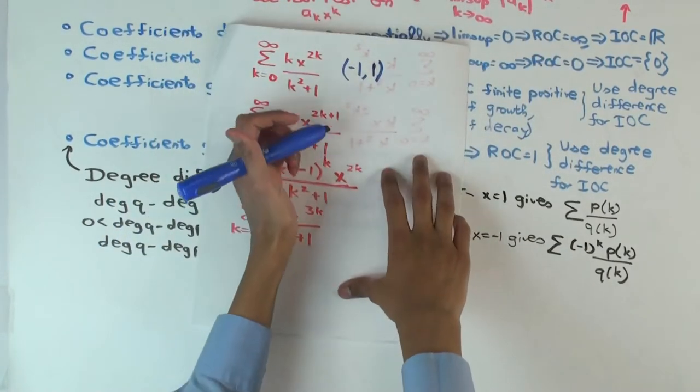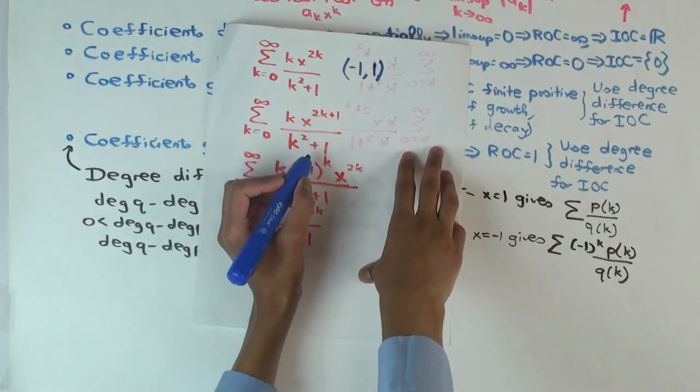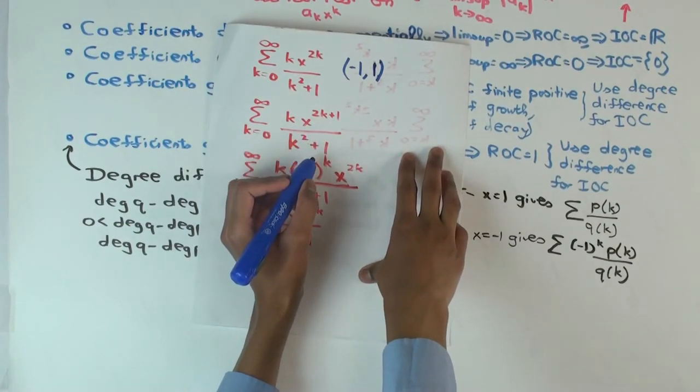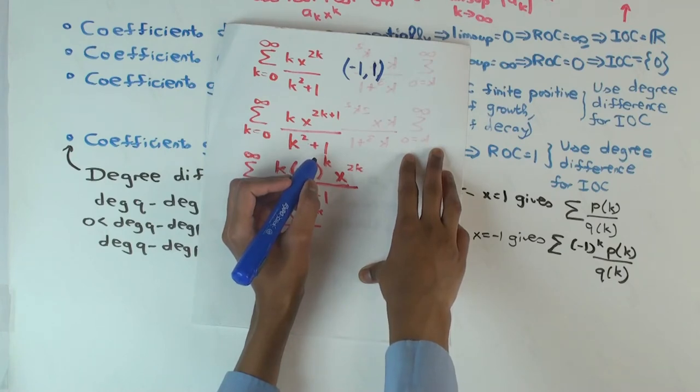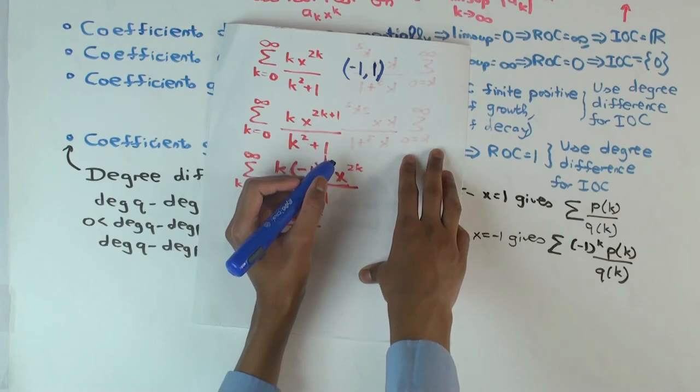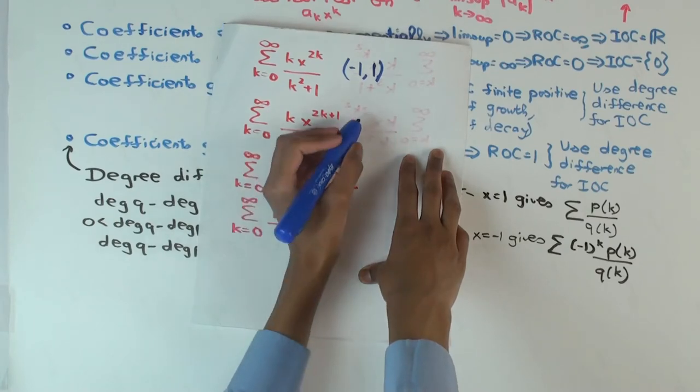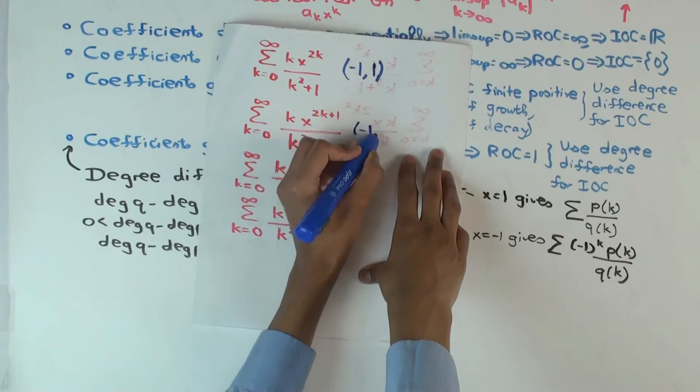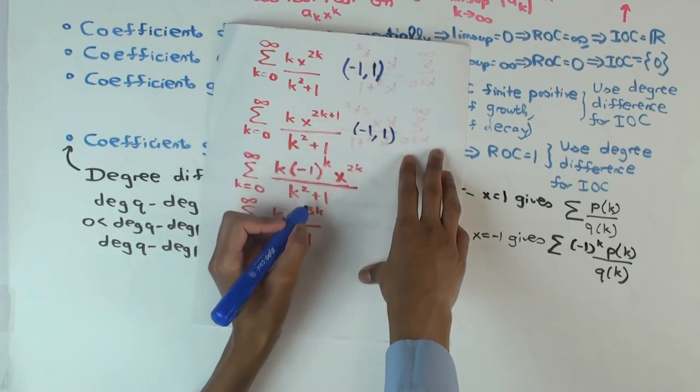Good. What about the next one? kx to the 2k plus one over k squared plus one. It's closed at negative one. Open at negative one. So why is it closed at negative one? Because it's alternating. Is it? Yeah. What are the signs? These are all powers of minus one, right? Oh, it's not alternating. It's always negative. Not alternating. It's always negative. So it's open at both.